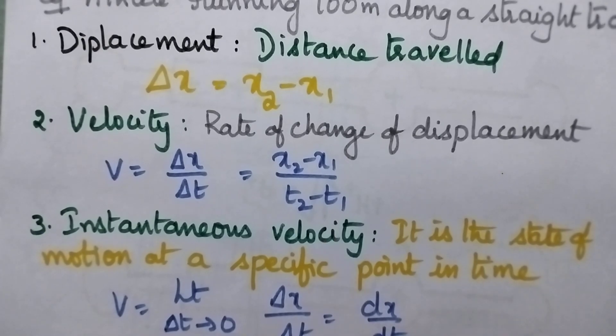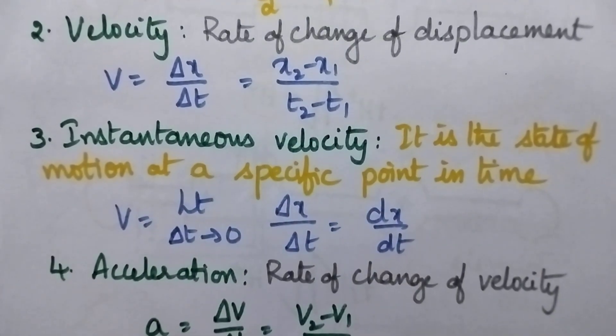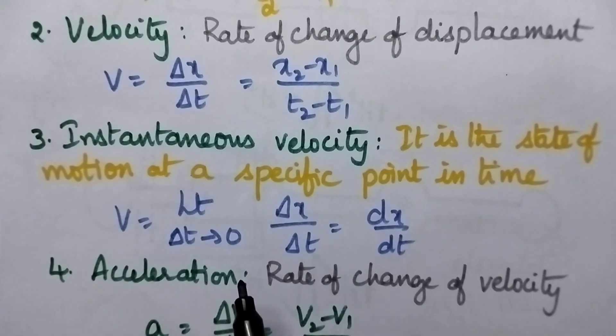Coming to the instantaneous velocity, that means we are going to calculate the state of motion at a specific point of time. That means the change in the time tends to zero. That means it is very small change in the displacement, so it can be called as dx by dt.